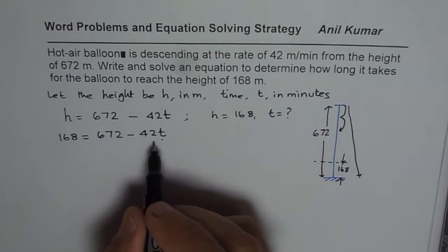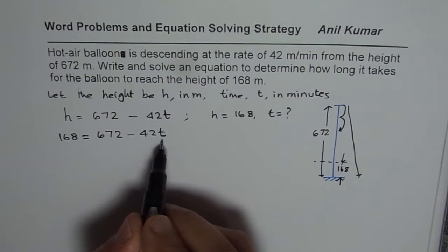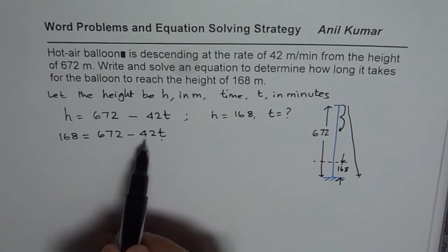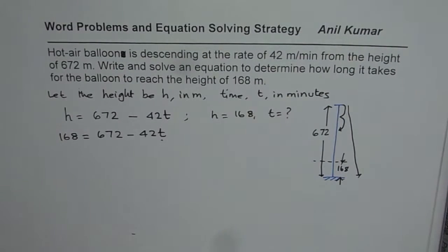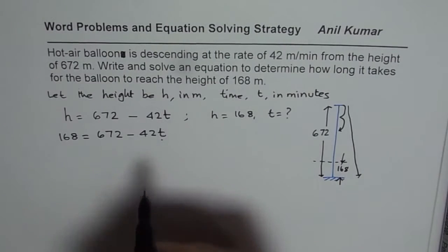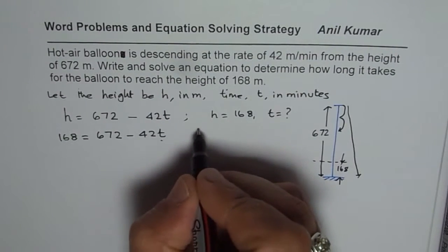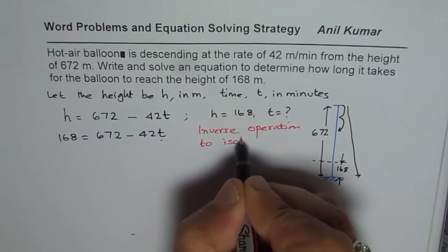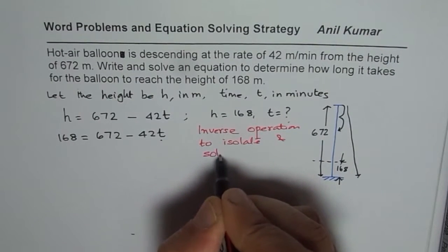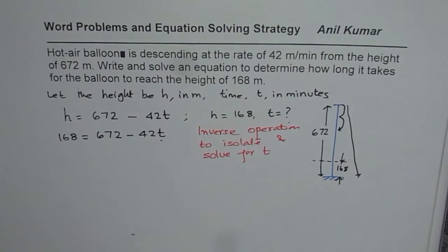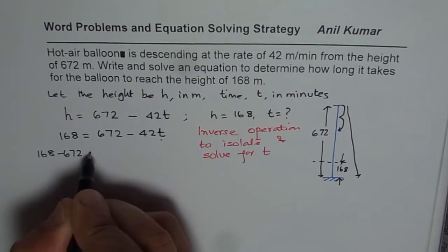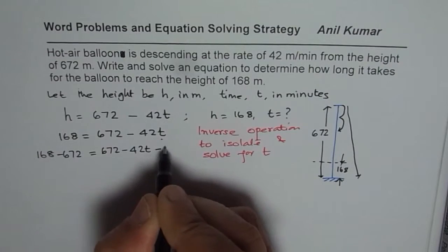This can be solved by rearranging the equation and isolating T using inverse operations. First, we subtract 672 from both sides: 168 − 672 = 672 − 42T − 672.